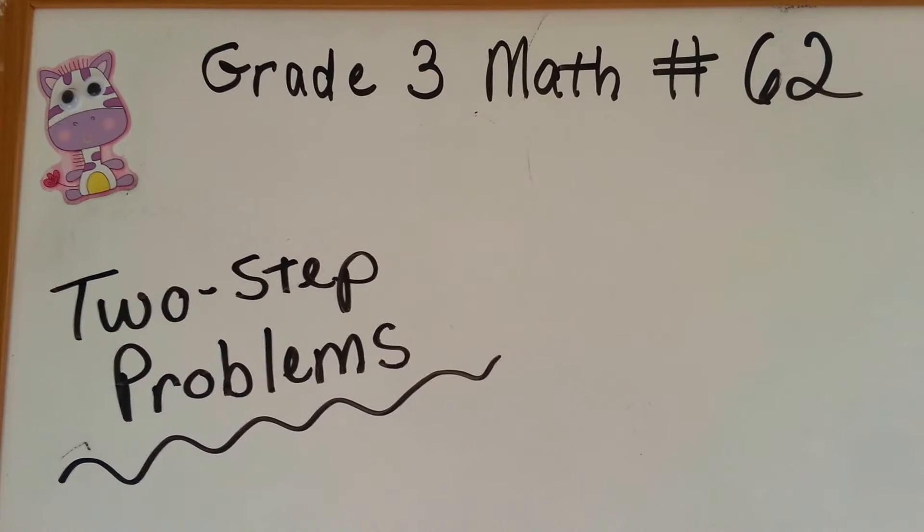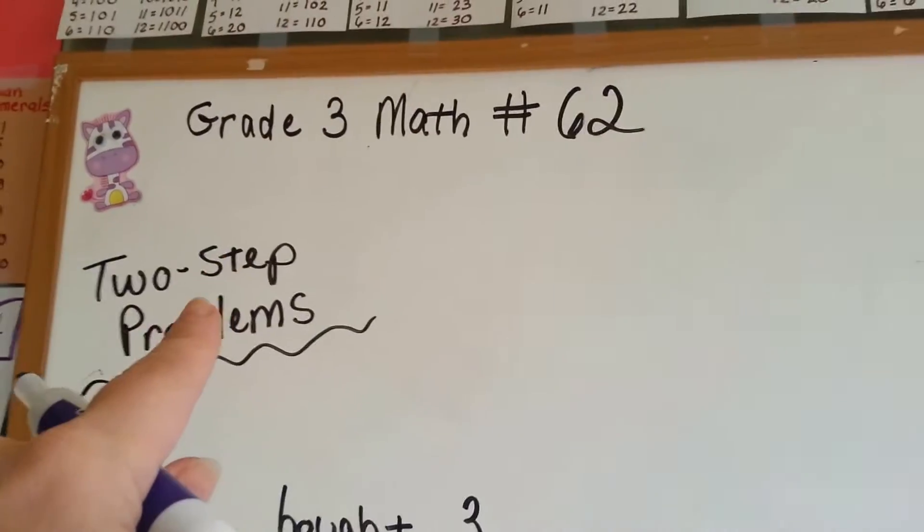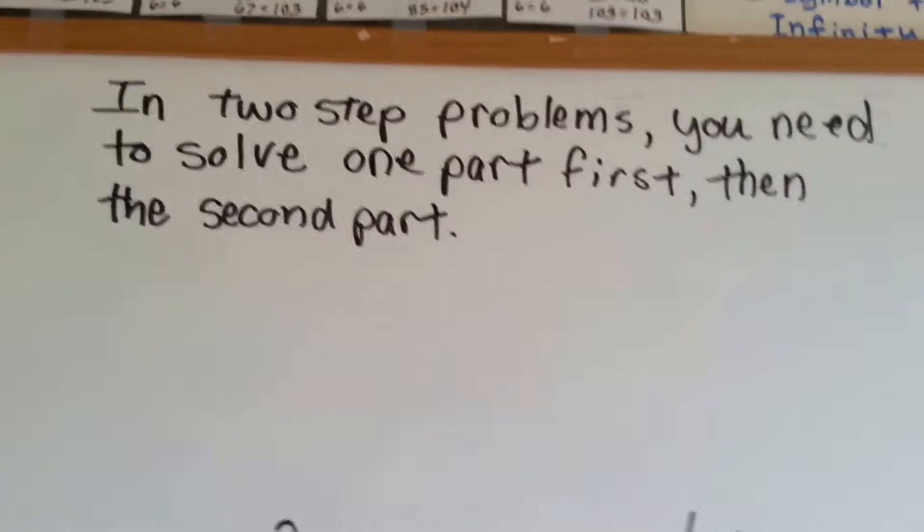Grade 3 math number 62. Two-step problems. Not the kind of dance two-step. These are problems that you have to do two parts, two steps to them.